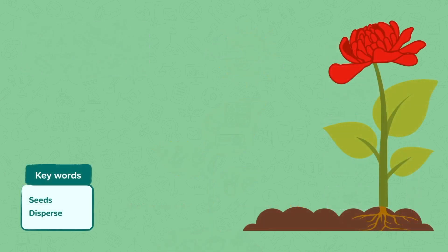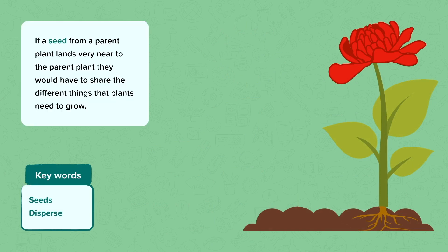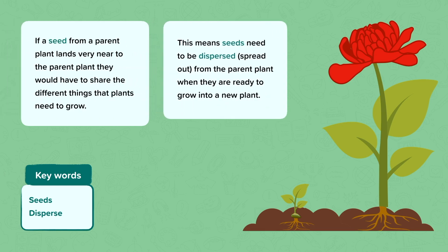So thinking about this, if a seed from a parent plant is spread out or dispersed near the parent, then they will have to share the same resources in order to grow. This might mean that there is not enough space, light, water, or nutrients from the soil for both plants to grow well. Therefore, the seeds need to be dispersed or spread out from the parent plant when they are ready to grow into a new plant.